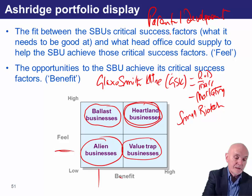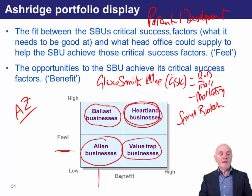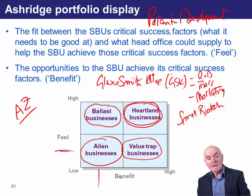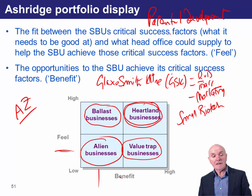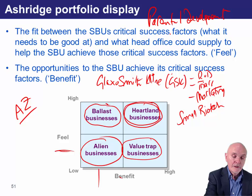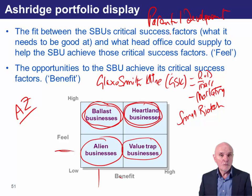Secondly, let's say GlaxoSmithKline is looking at AstraZeneca — another very large, successful international pharmaceuticals company. But AstraZeneca doesn't need help; it's good at research and development, knows all about clinical trials, and is very good at international marketing. They understand each other perfectly, but if Glaxo were to merge with AstraZeneca, you're getting a balanced business. You won't necessarily be doing any harm, but the two together will not do significantly better than the two apart — so it's a bit of a waste of time. That's the 'ballast business'.